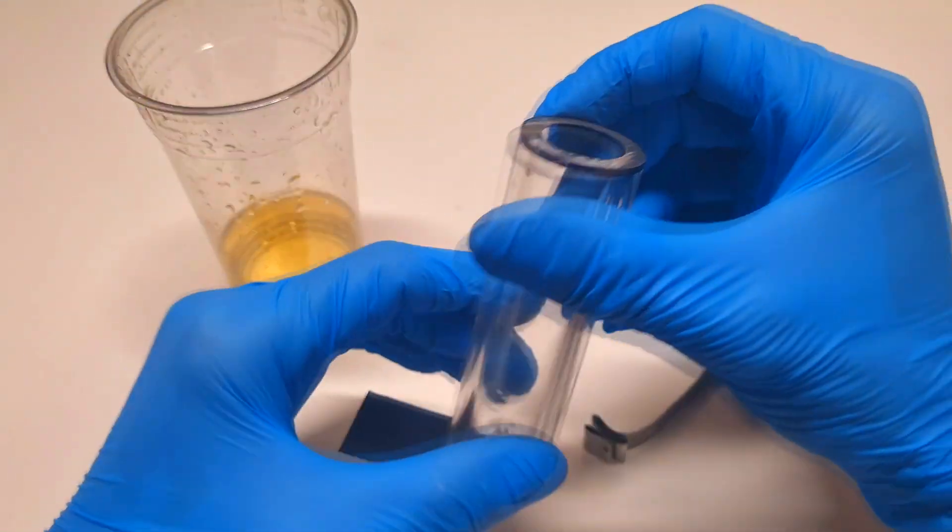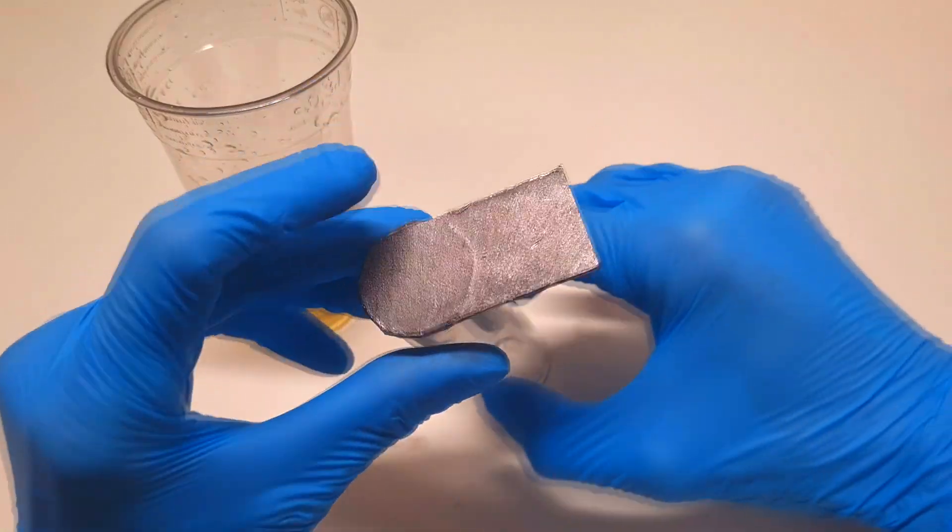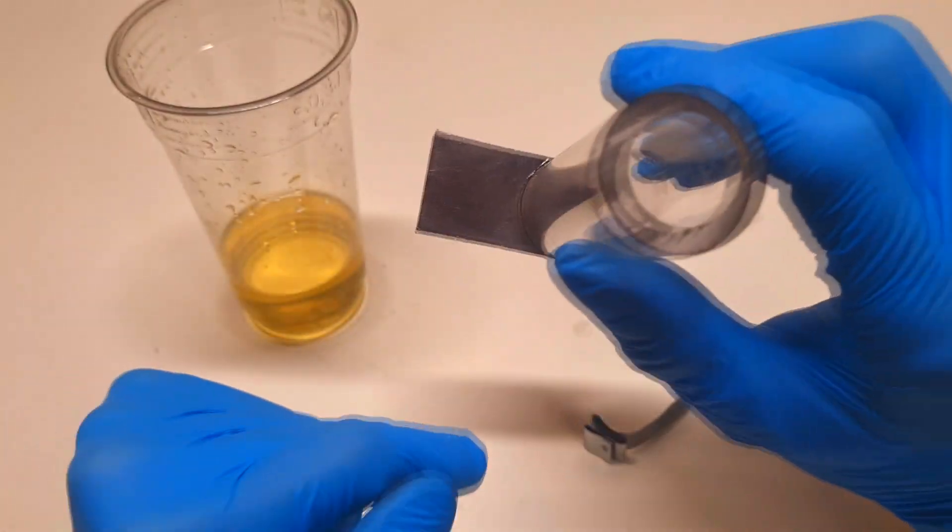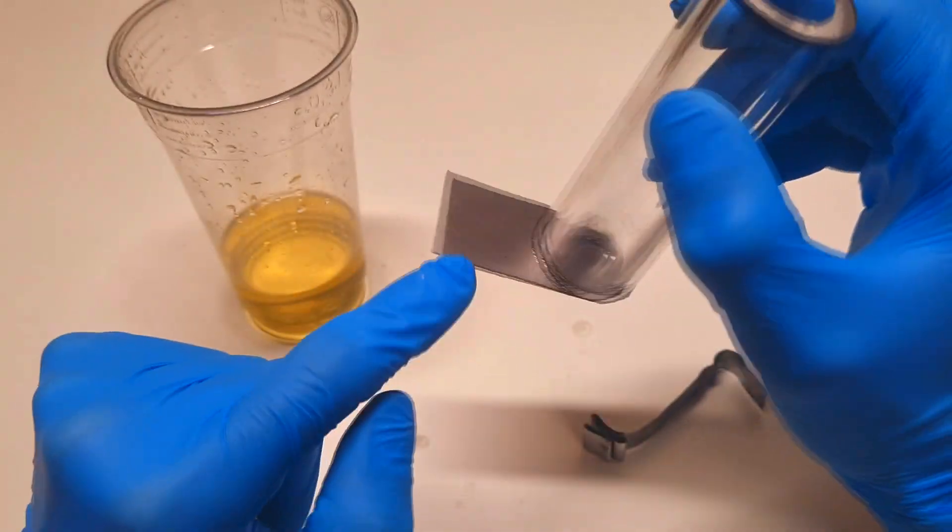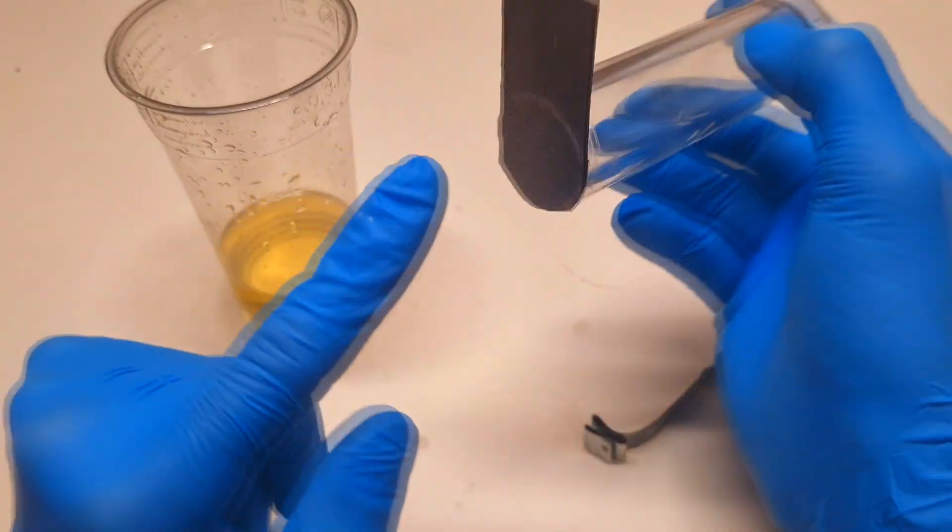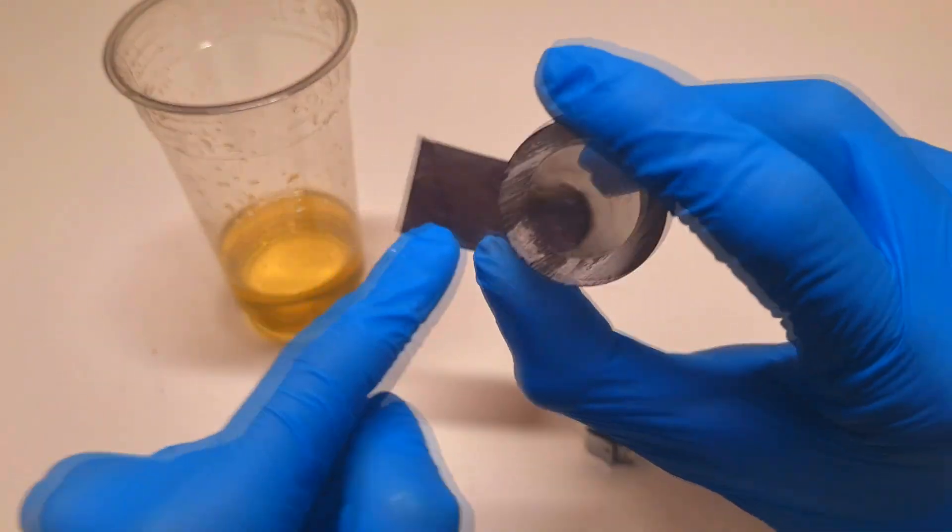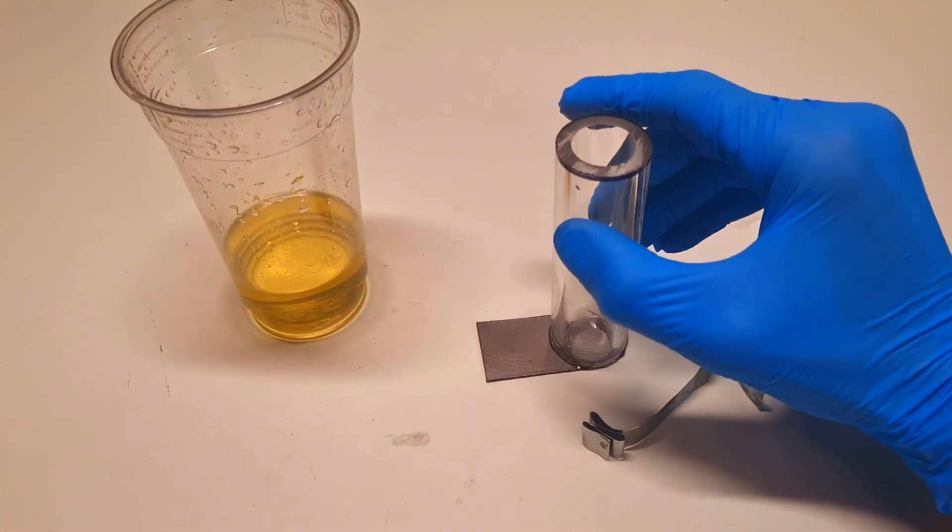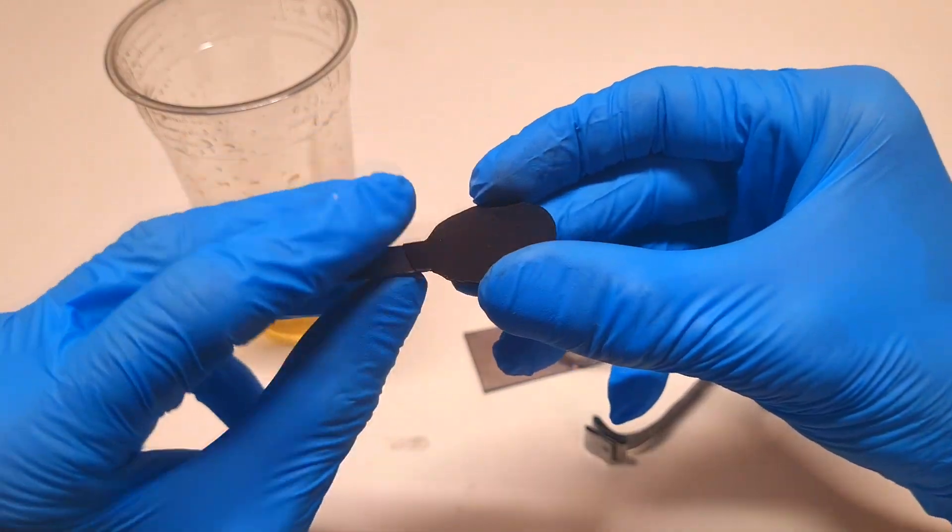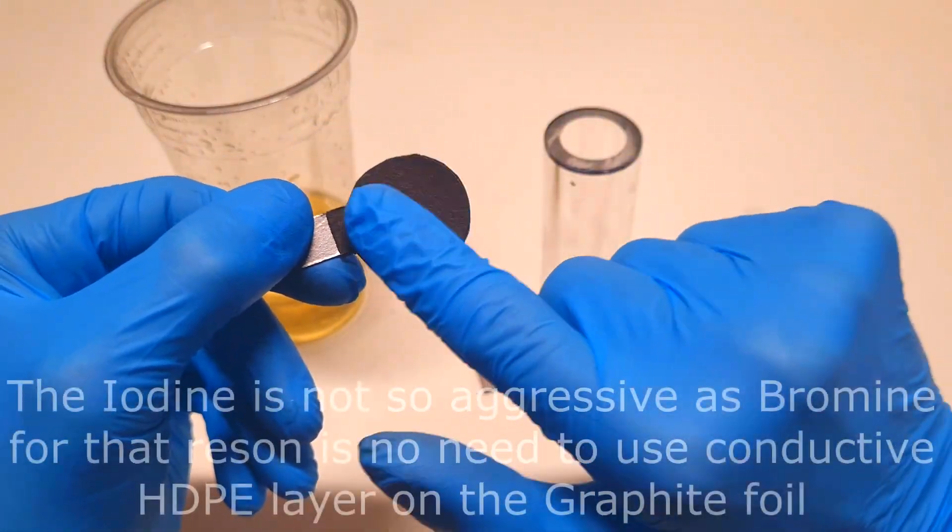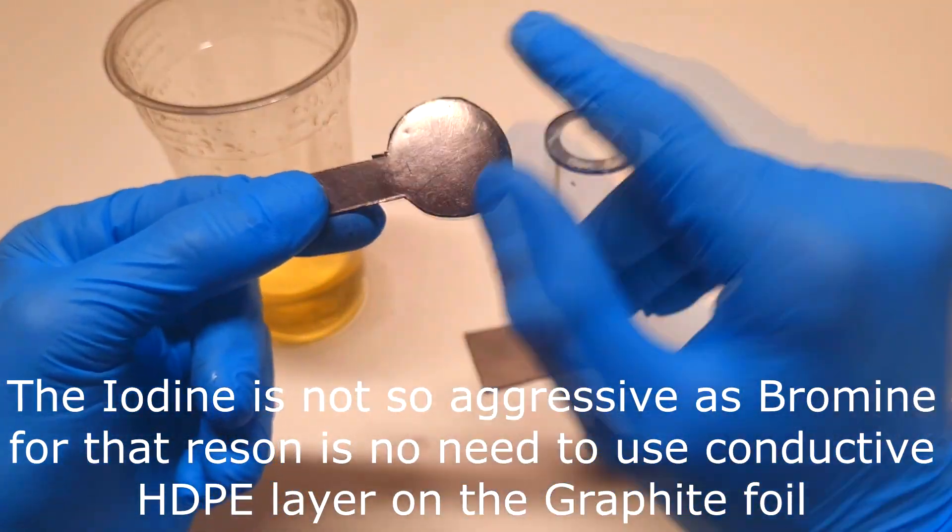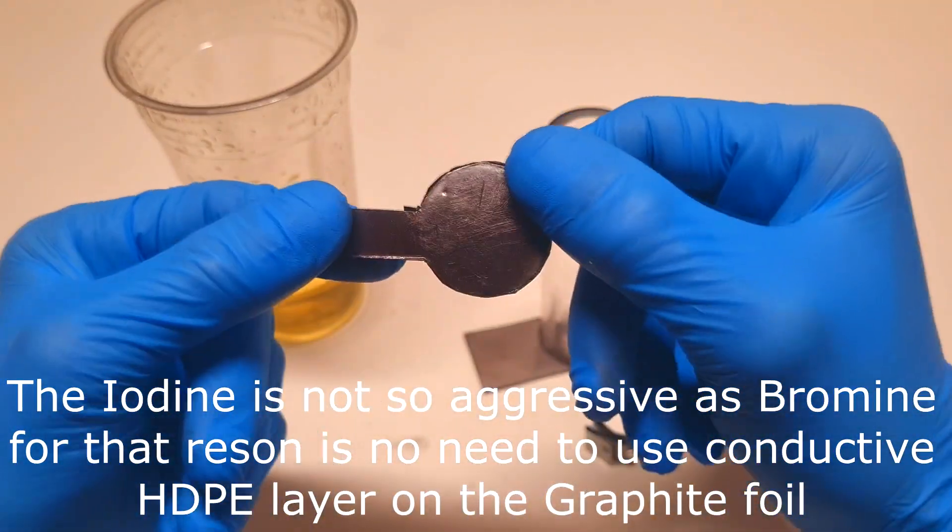So over here again I have this acrylic pipe which will serve as the housing. And here I have my positive current collector, which this time I only glued some graphite foil on this acrylic tube. So in this case I don't use the electrode like I used over here, which is some conductive HGP welded directly on the surface of this graphite foil.